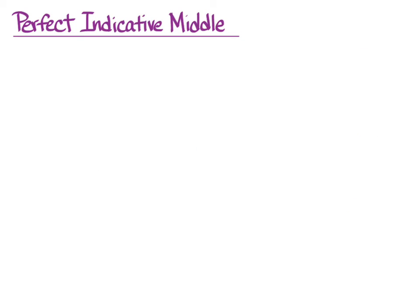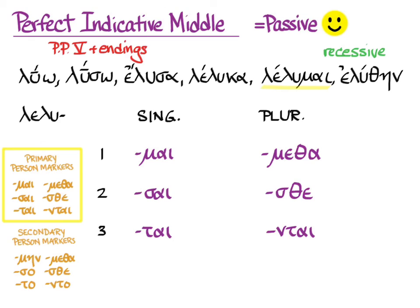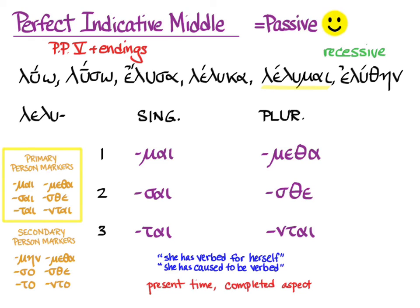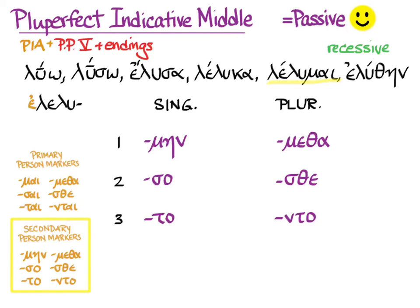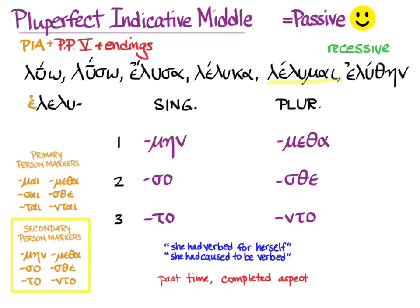For the perfect indicative middle, which is just like the perfect indicative passive: from the fifth principal part, you add the primary middle/passive person markers directly on the stem with recessive accent. The default translation for the middle is 'she has caused to be verbed' or 'she has verbed for herself,' because we are in present time with completed aspect. Finally, the pluperfect indicative middle — rarely seen — looks exactly like the passive version: fifth principal part with the past indicative augment, secondary person markers, recessive accent. The default translation is 'she had verbed for herself' or 'she had caused to be verbed,' or whatever past time, completed aspect translation makes the most sense.